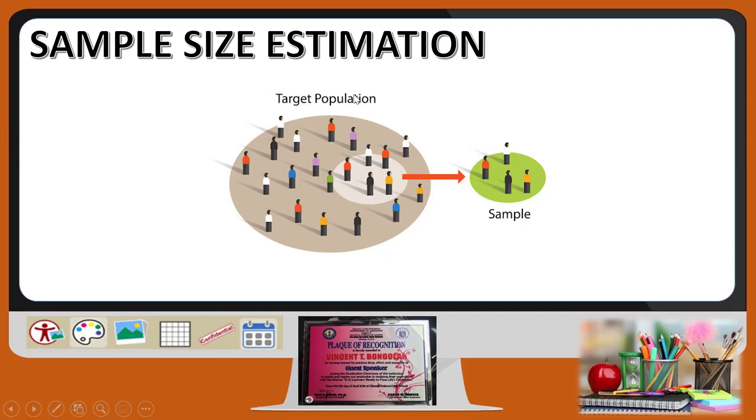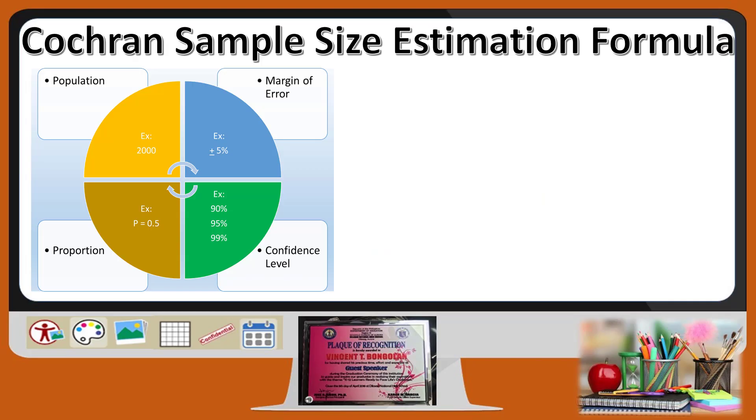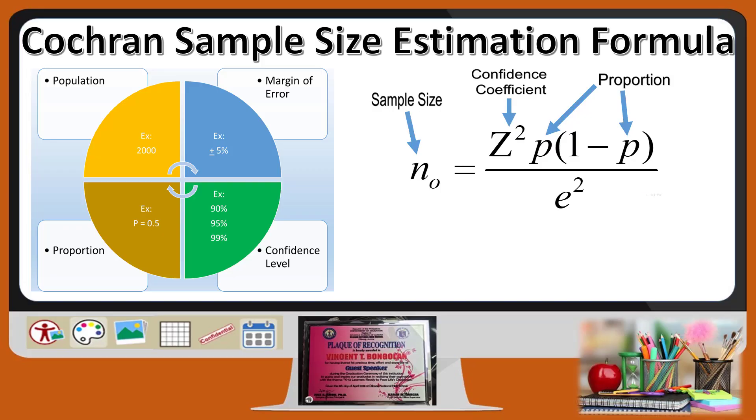Alright, so in this video, I will no longer be discussing the difference between a census and a survey, as well as the probability and non-probability sampling technique. To start with, you will be encountering different formulas and terminologies or requirements, such as the sample size, the confidence coefficient, the proportion, the margin of error, and the confidence level.